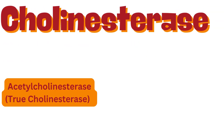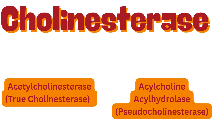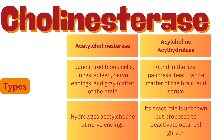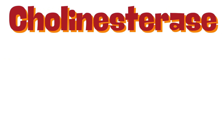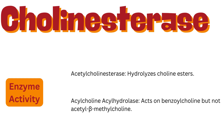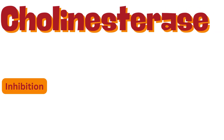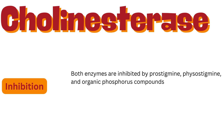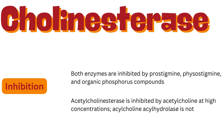Cholinesterase refers to two types of enzymes: acetylcholinesterase (true cholinesterase) and acylcholine acylhydrolase (pseudocholinesterase). Acetylcholinesterase is found in red blood cells, lungs, spleen, nerve endings, and gray matter of the brain; it hydrolyzes acetylcholine at nerve endings. Acylcholine acylhydrolase is found in the liver, pancreas, heart, white matter of the brain, and serum; its exact role is unknown but is proposed to deactivate octanoyl ghrelin. Acetylcholinesterase hydrolyzes choline esters; acylcholine acylhydrolase acts on benzoylcholine but not acetylbutyrylcholine. Both enzymes are inhibited by prostigmine, physostigmine, and organic phosphorus compounds. Acetylcholinesterase is inhibited by acetylcholine at high concentrations, whereas acylcholine acylhydrolase is not.